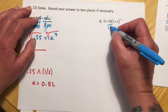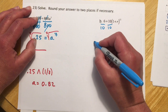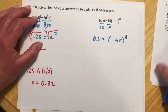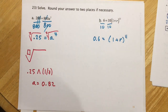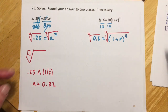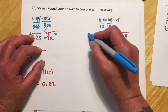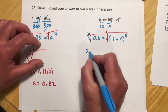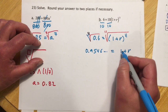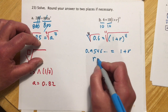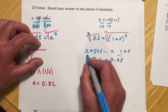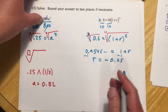For B, divide both sides by 10: 6 over 10 equals 0.6, and that equals (1 plus R) to the 11th. Take the 11th root of both sides. That decimal works out to something like 0.95, and that equals 1 plus R. Subtracting 1, R equals approximately negative 0.05.